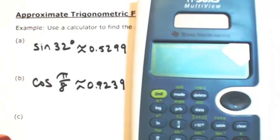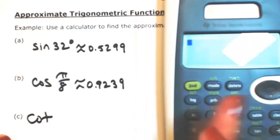Alright, one more. Let's say we want to find the cotangent of 10 degrees.